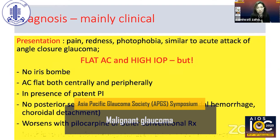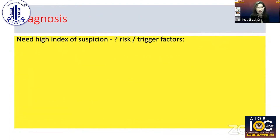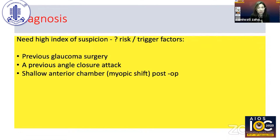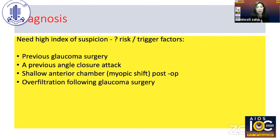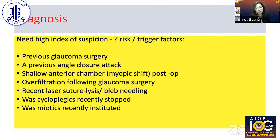These cases worsen with pilocarpine or other conventional treatment. If you have just performed surgery and still have the paracentesis open, you will find it very difficult to reform the anterior chamber with viscoelastic. A high index of suspicion is required: Is it a previously operated case? Does the patient have a history of angle closure? Is there a gradual myopic shift postoperatively, over-filtration following glaucoma surgery, recent laser suture lysis or bleb needling? Were cycloplegics recently stopped or miotics recently started? Is there a previous malignant glaucoma attack in the fellow eye?